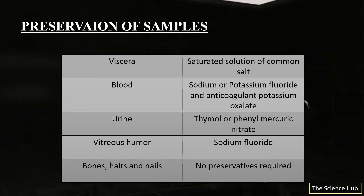For the preservation of samples: viscera is preserved in a saturated solution of common salt. Blood is preserved in sodium or potassium fluoride with anticoagulant potassium oxalate. Urine is preserved using thymol or phenyl mercuric nitrate. Vitreous humor is preserved with sodium fluoride. For bones, hair, and nails, no preservatives are required.